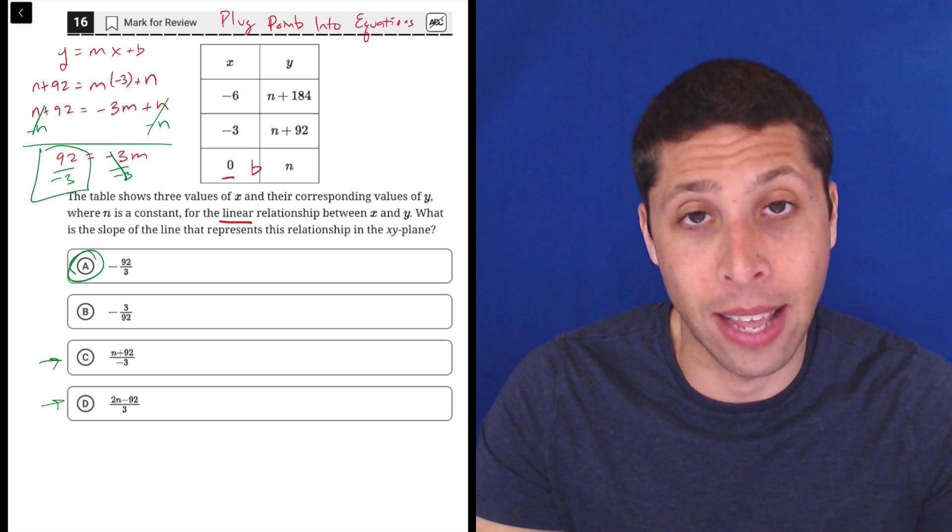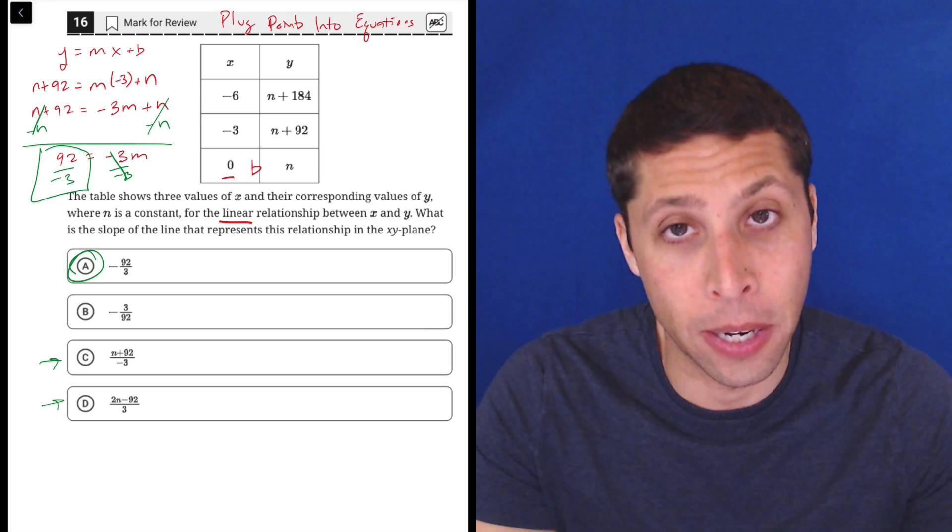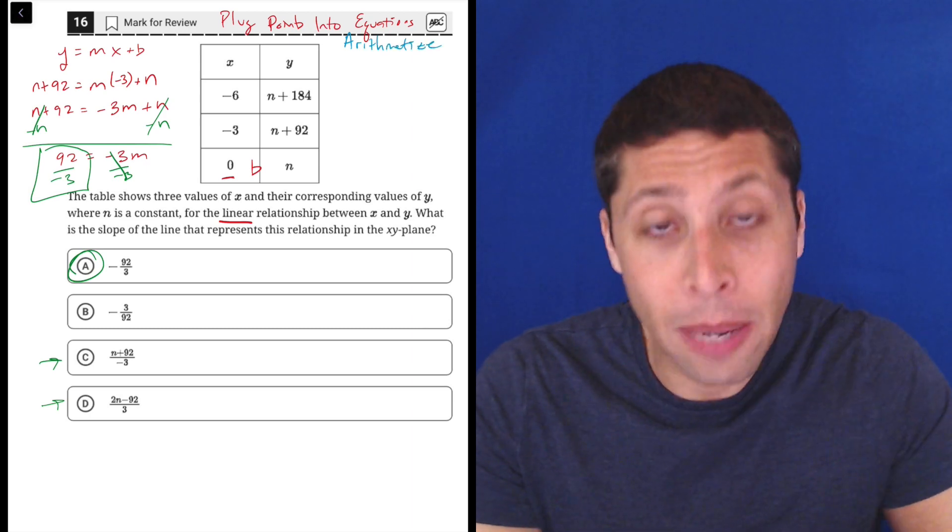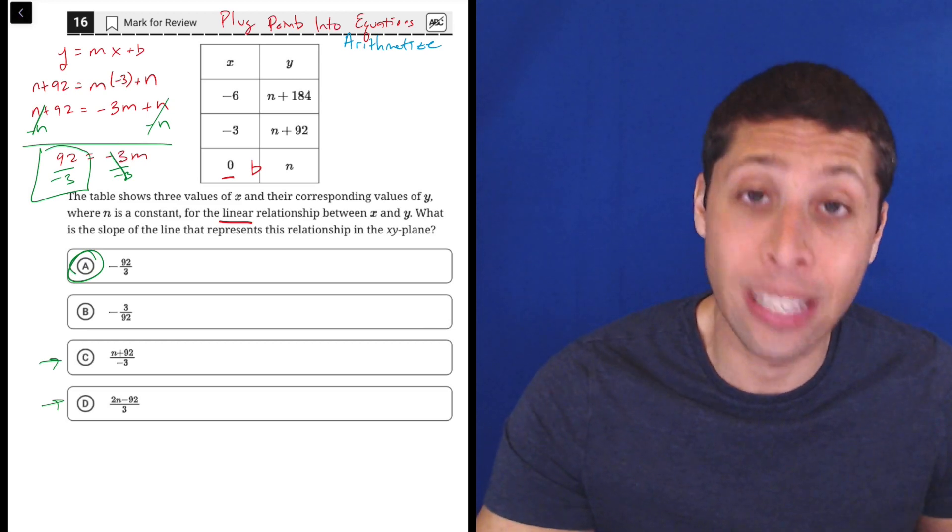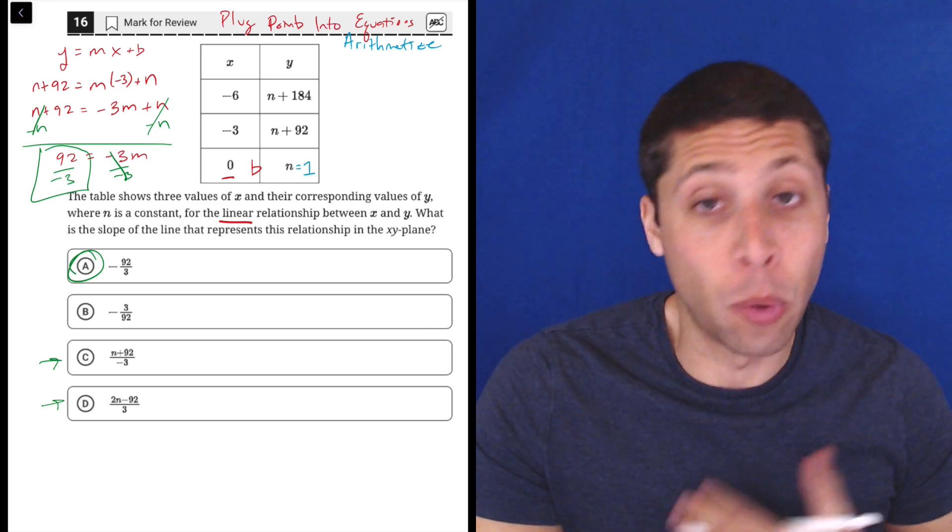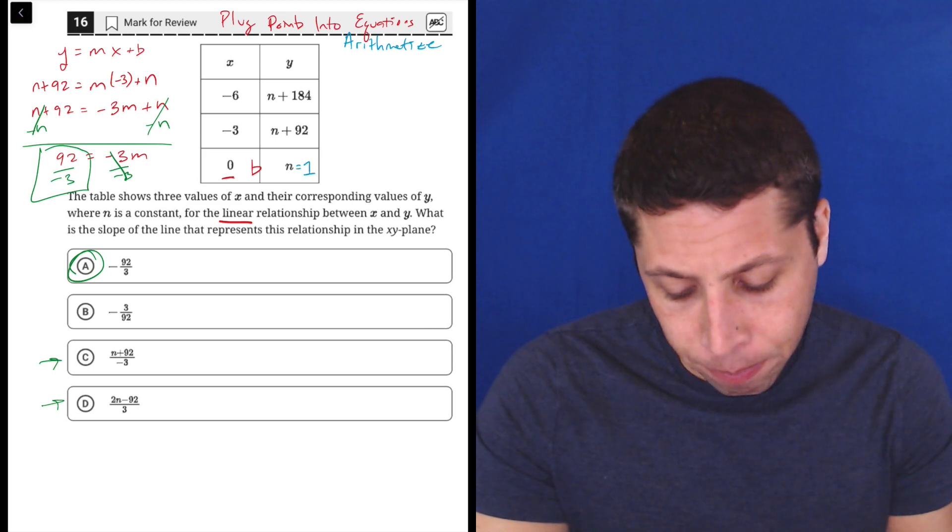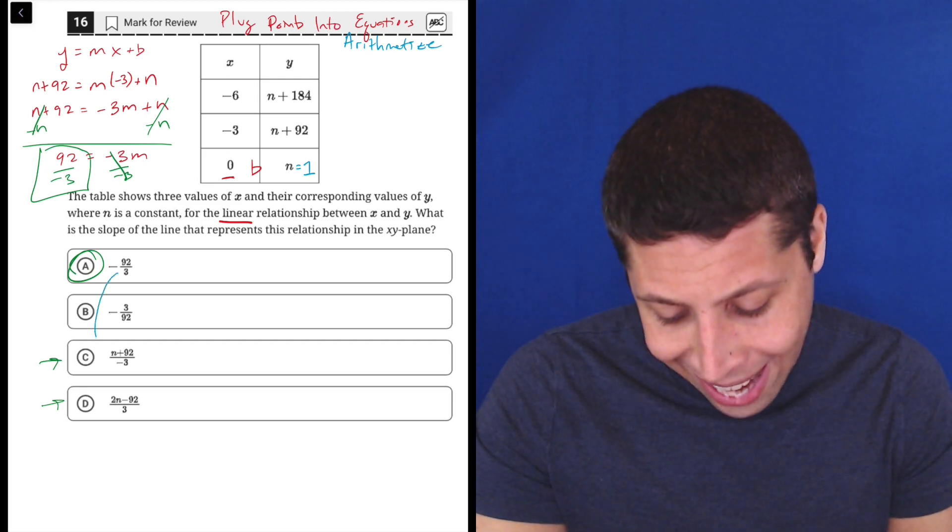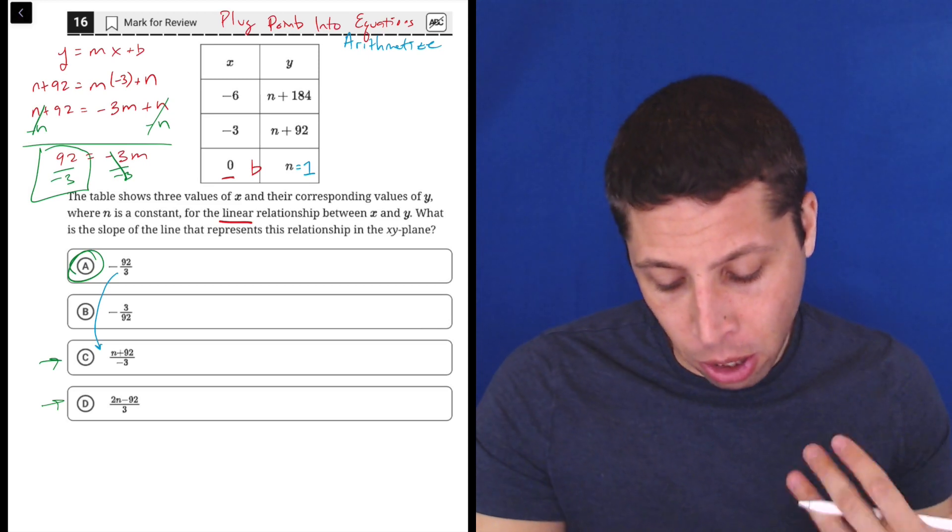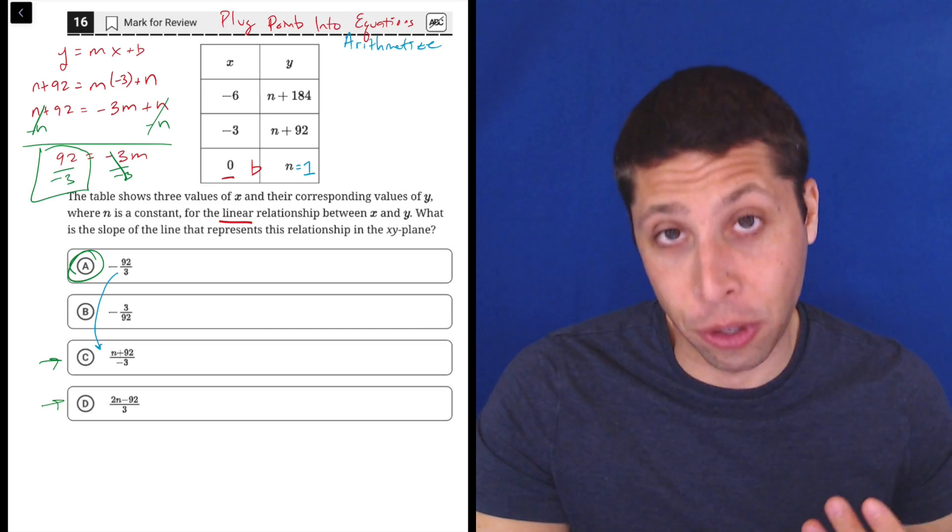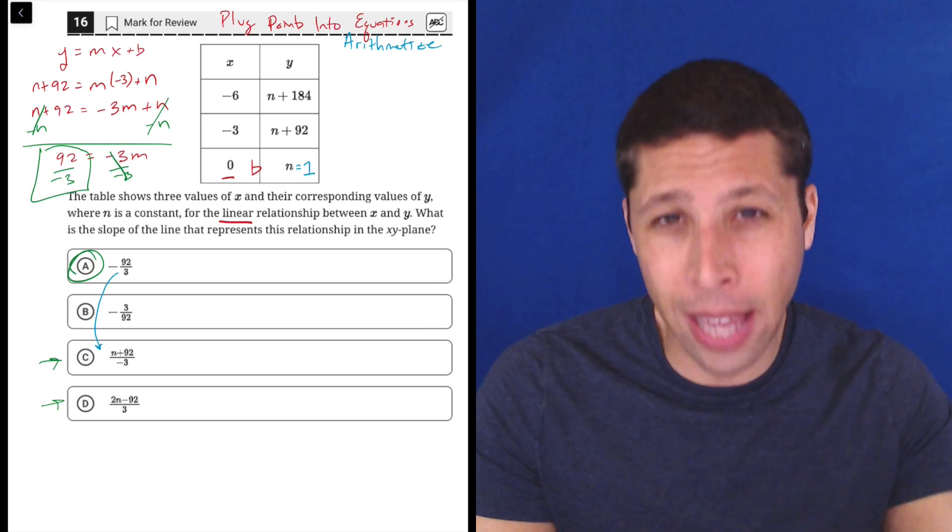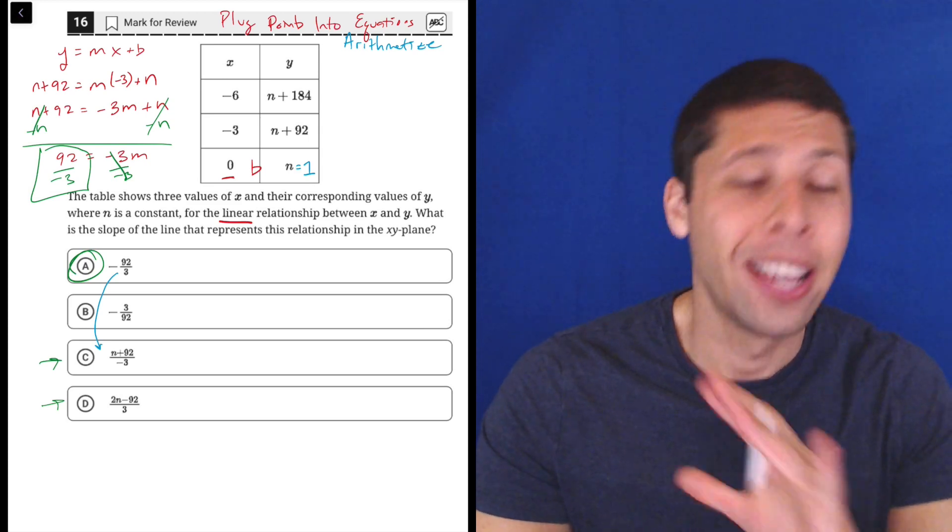But if you're really bothered by the fact that there's an N in these points, we could also have just made it disappear. Remember that one way that we can plug points into equations is we can arithmetize. We can make up values for variables that don't end up mattering. We can see what happens. So in this case, if you don't like that N, make it go away. In this case, I would probably make it something like 1 because I noticed that if N is going to be 0, choice A and choice C would kind of look the same because 0 plus 92 is just 92. And so that would, C and A would both be 92 over negative 3. So I don't want to have two answers that look the same. So kind of preempting that, I'm going to choose 1 instead of my typical 0 for N.